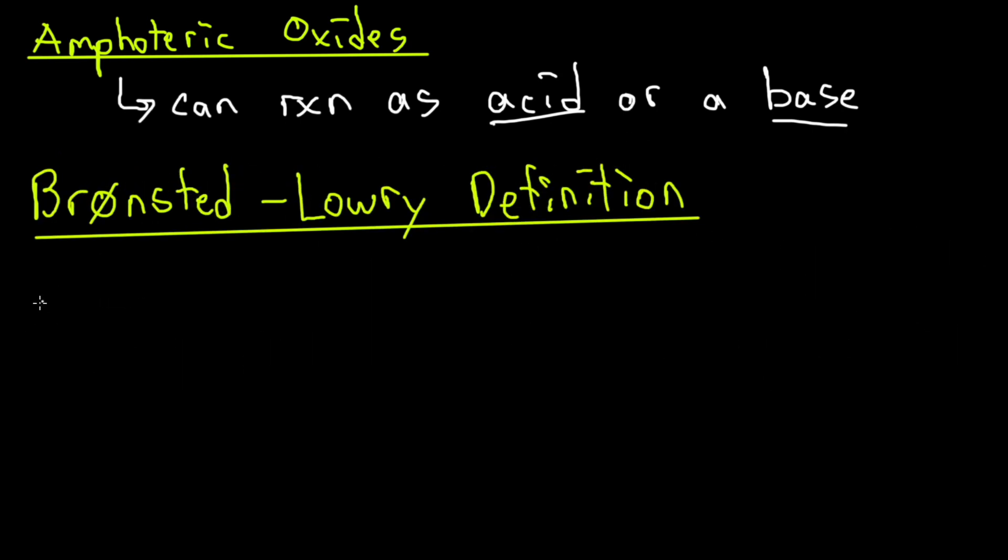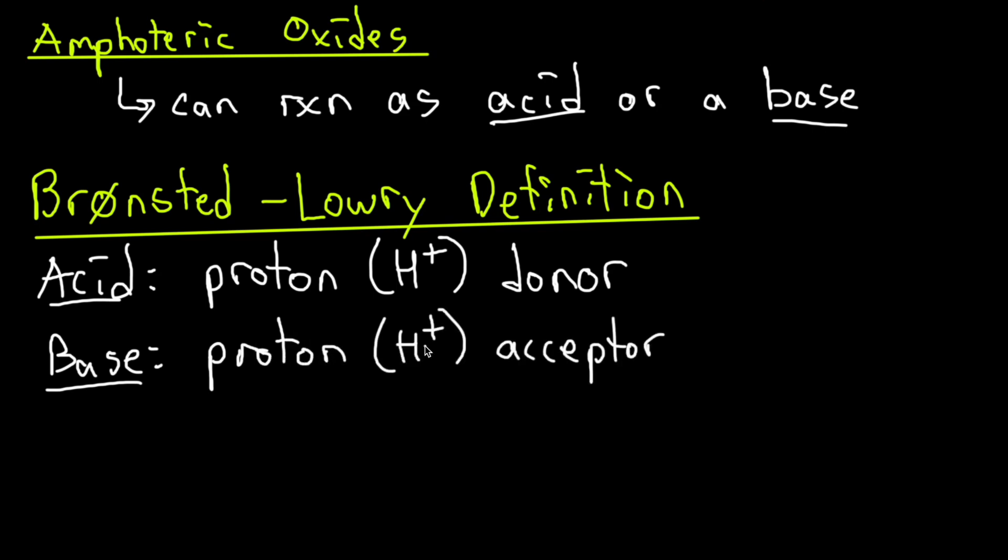Instead we came up with a different definition called the Bronsted-Lowry definition. So the Bronsted-Lowry definition is a little bit simpler. An acid, according to these scientists, is going to be a proton donor and a base is going to be identified as a proton acceptor. Now that we know the two definitions, and these ones are the ones that are typically used to this day, we can now establish what is an amphoteric oxide since it can be both acid and a base.